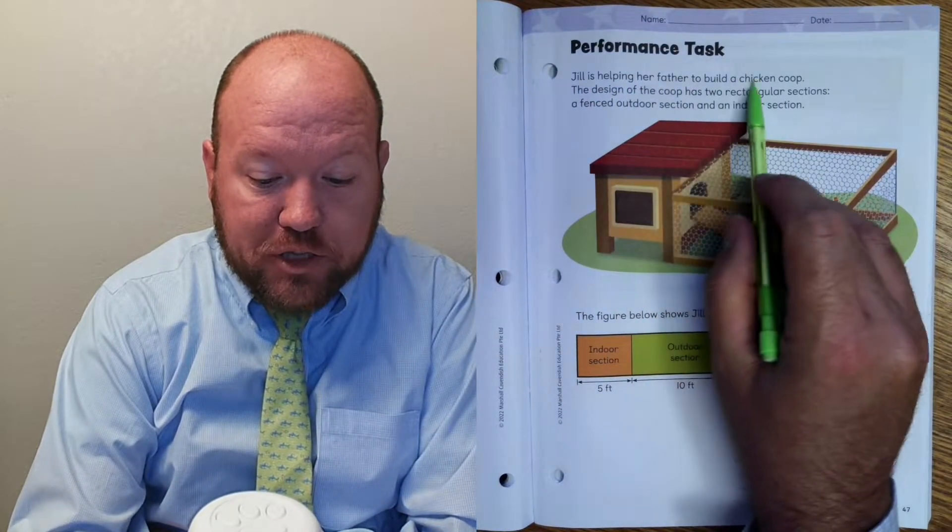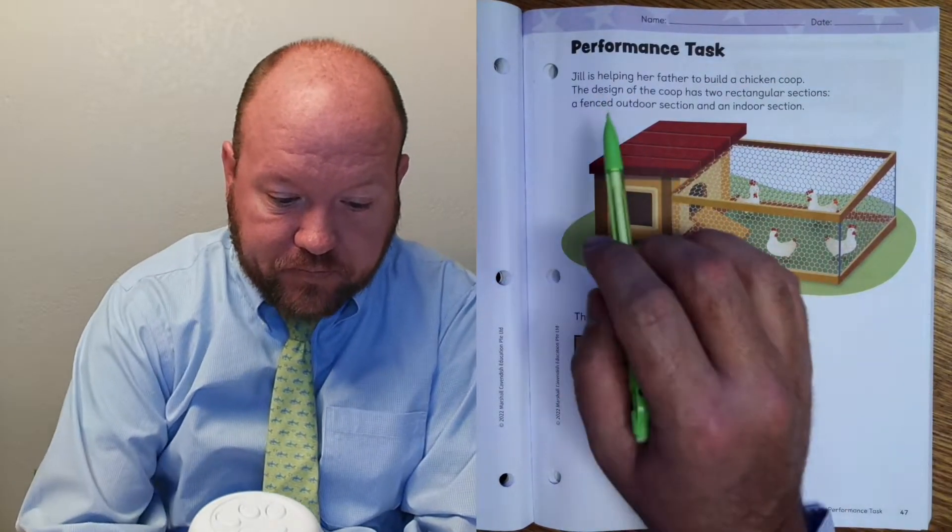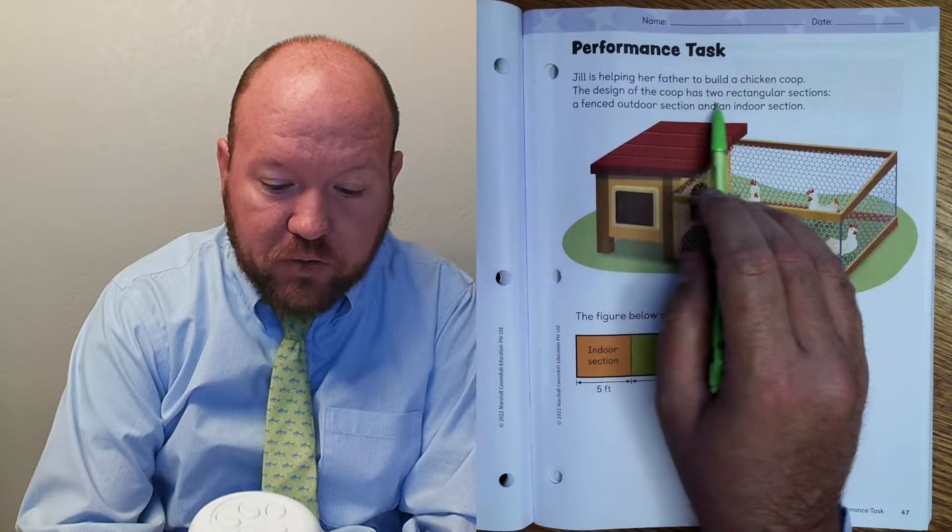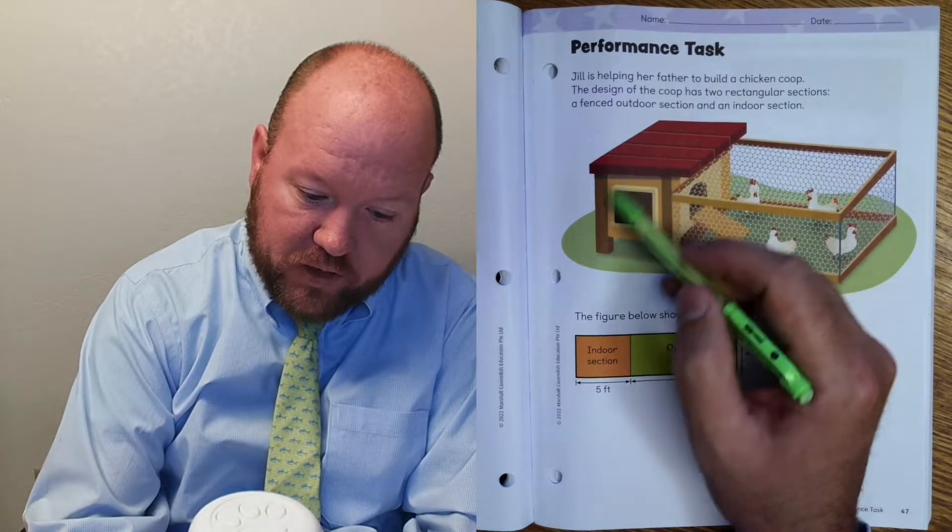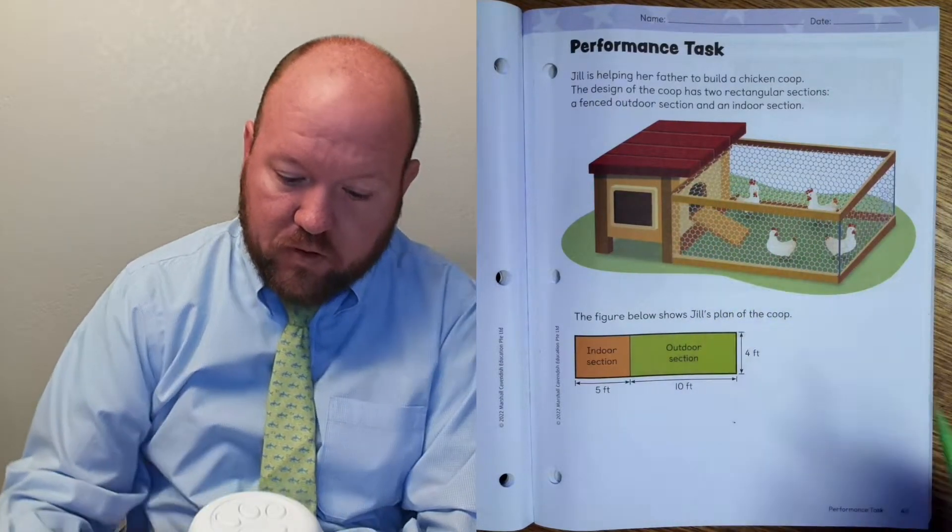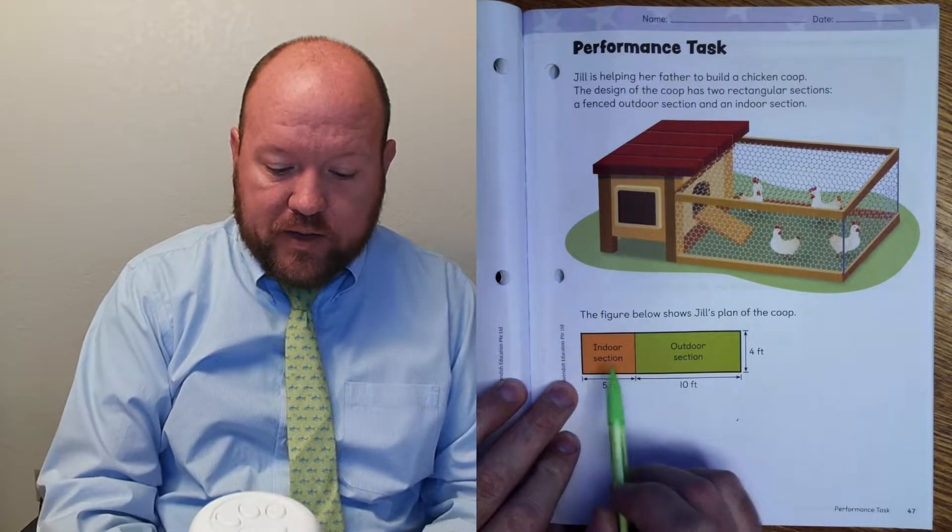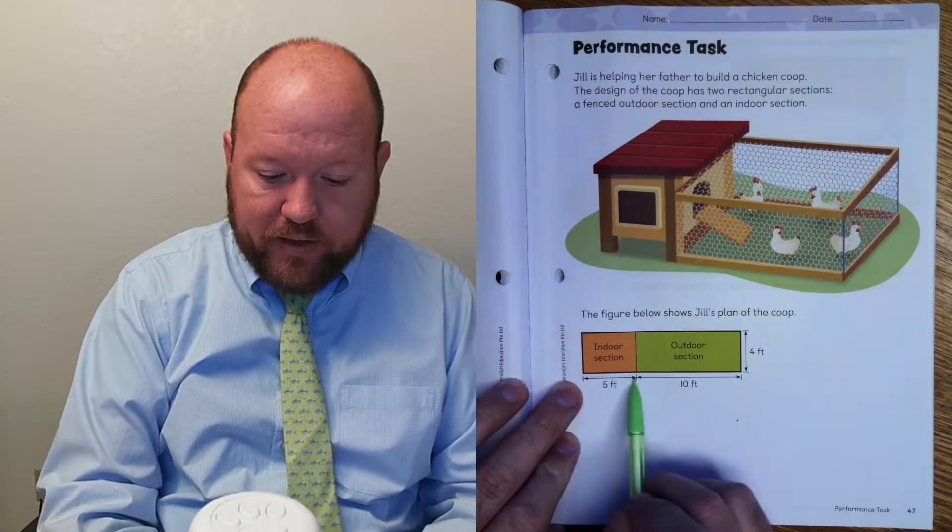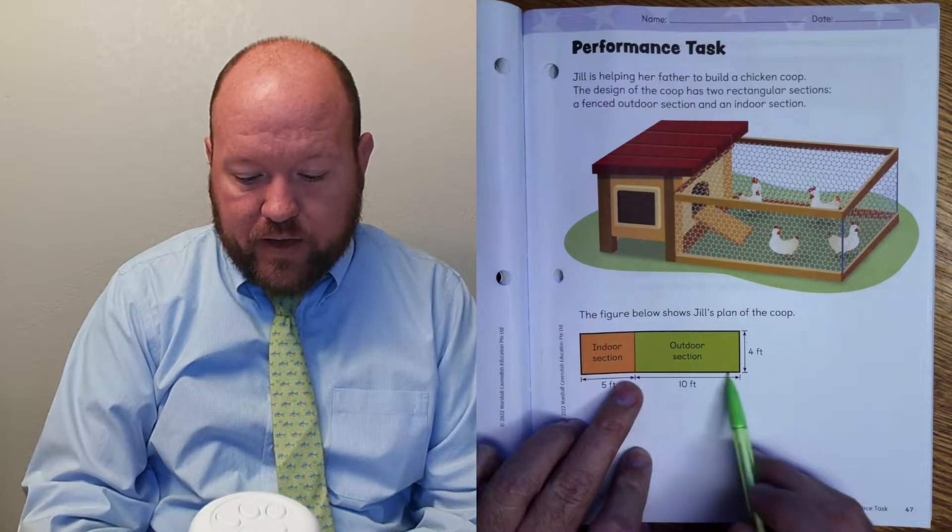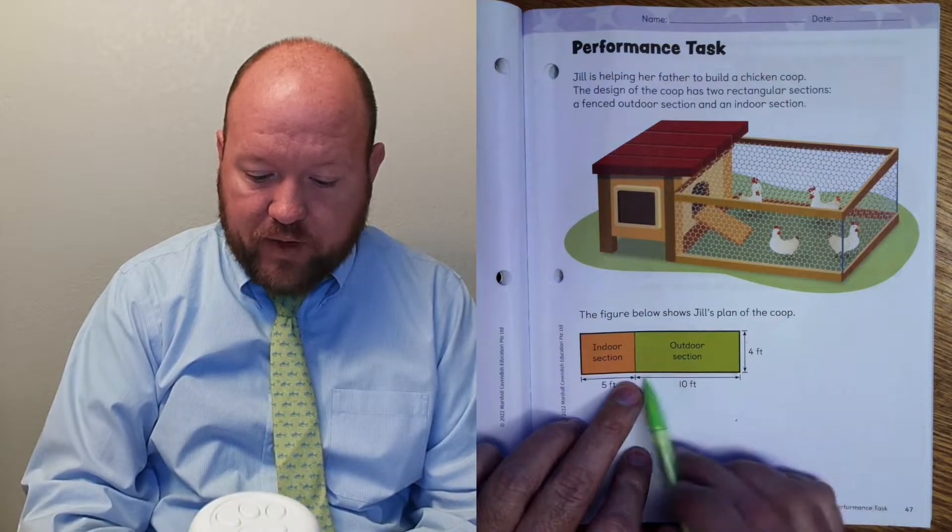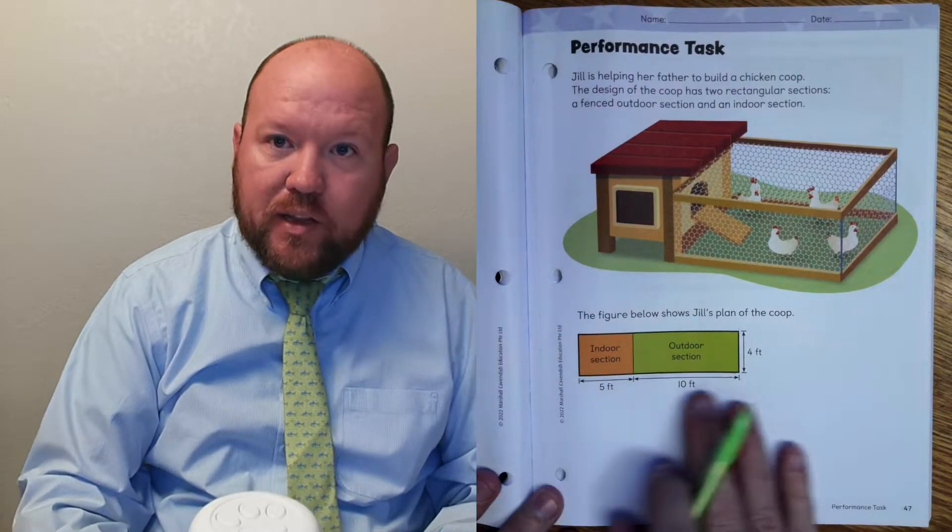Jill is helping her father to build a chicken coop. So here's the chicken coop, it's where the chickens live and where they go outside. The design of the coop has two rectangular sections, a fenced outdoor section and an indoor section. Here's the indoor, here is the outdoor. So here is her plans for it.